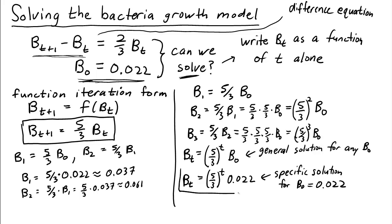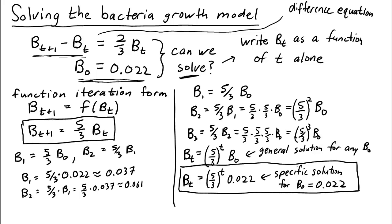Using this formula, we can quickly calculate the bacteria population size at any time point t according to the model. If we want to know the population size after a certain number of minutes, we have to remember to first divide by 60, because there are 60 minutes in each time interval.